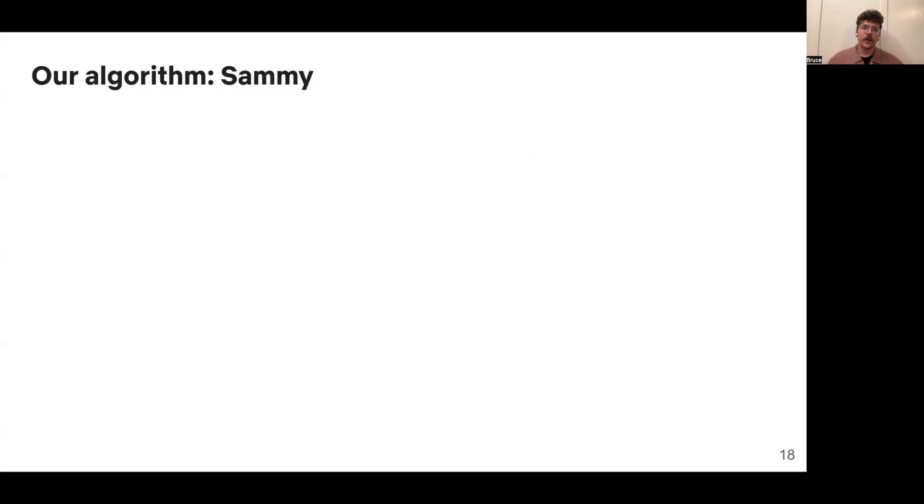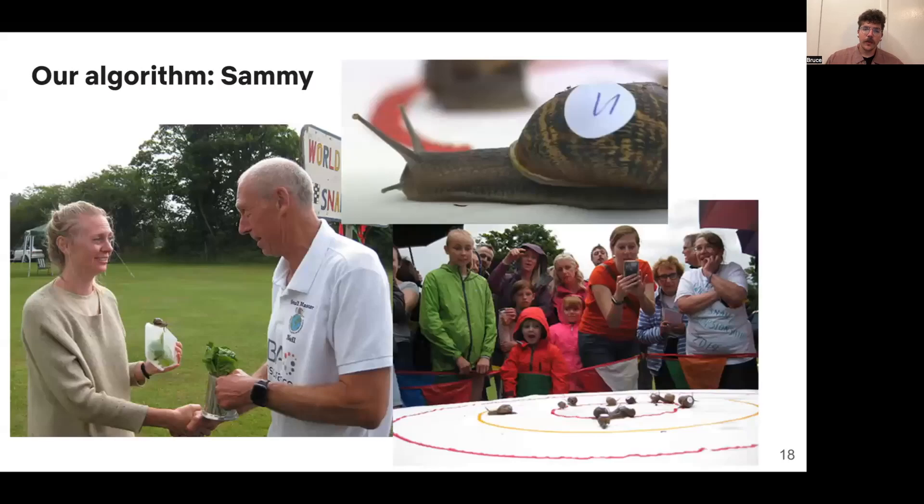Now let me tell you about our algorithm, which is called SAMI, that smooths out video traffic while maintaining QoE. SAMI is named after the current world record holder for the world's fastest snail, which you can see in the top right there. It's slowing things down, smoothing things out, but it's still fast and fast enough to get the job done.